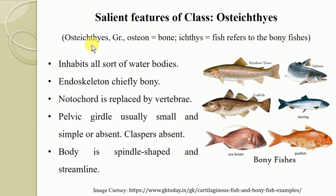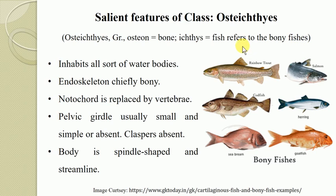The word Osteichthyes comes from Greek origin: Osteon means bone and Ichthys means fish, referring to the bony endoskeleton of these fishes. Hence all Osteichthyes are known as bony fishes as they contain a bony endoskeleton in their body. Let us now see the salient features of class Osteichthyes.